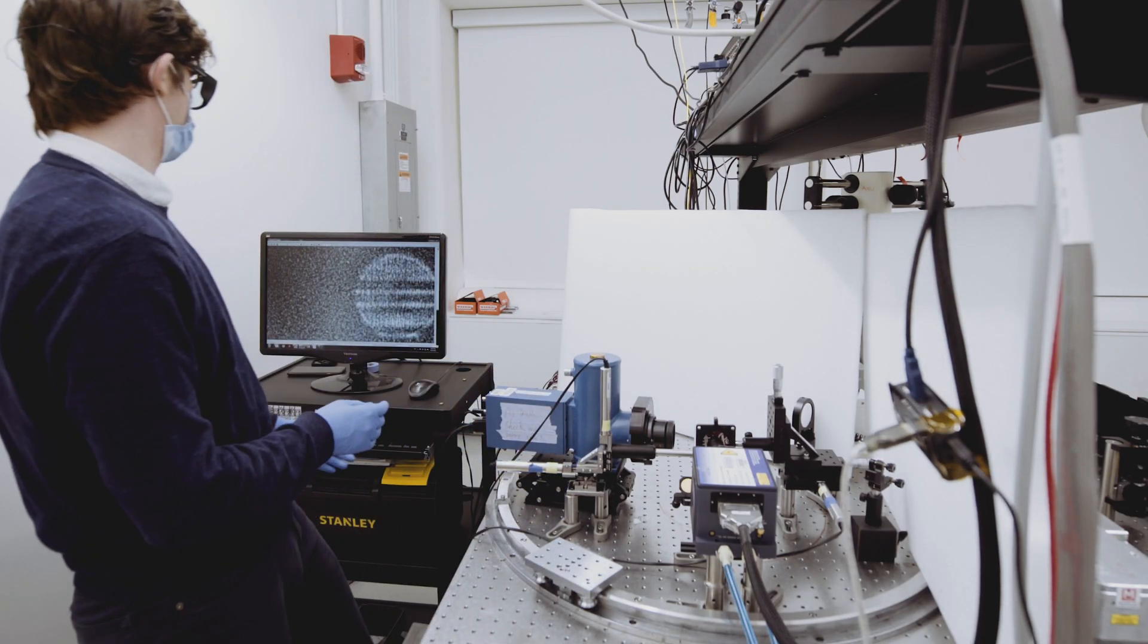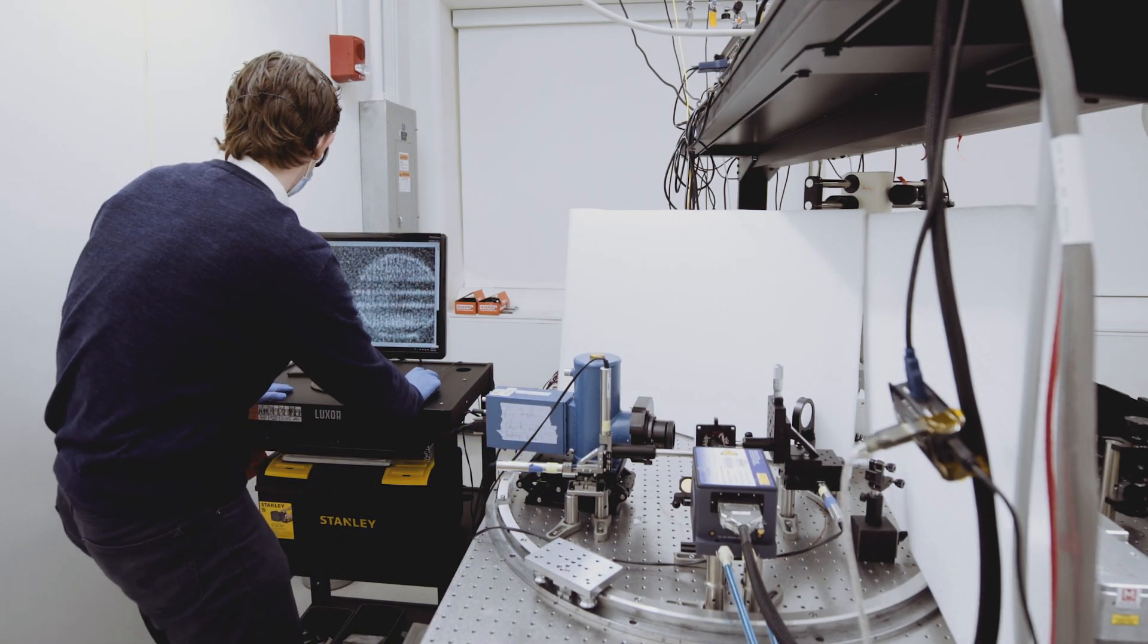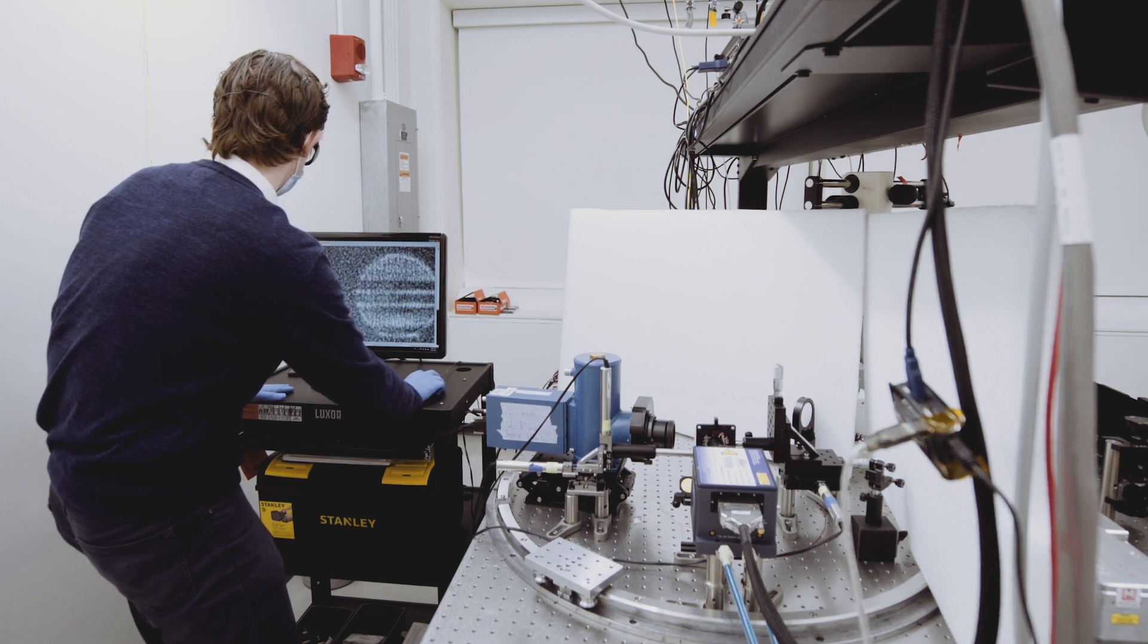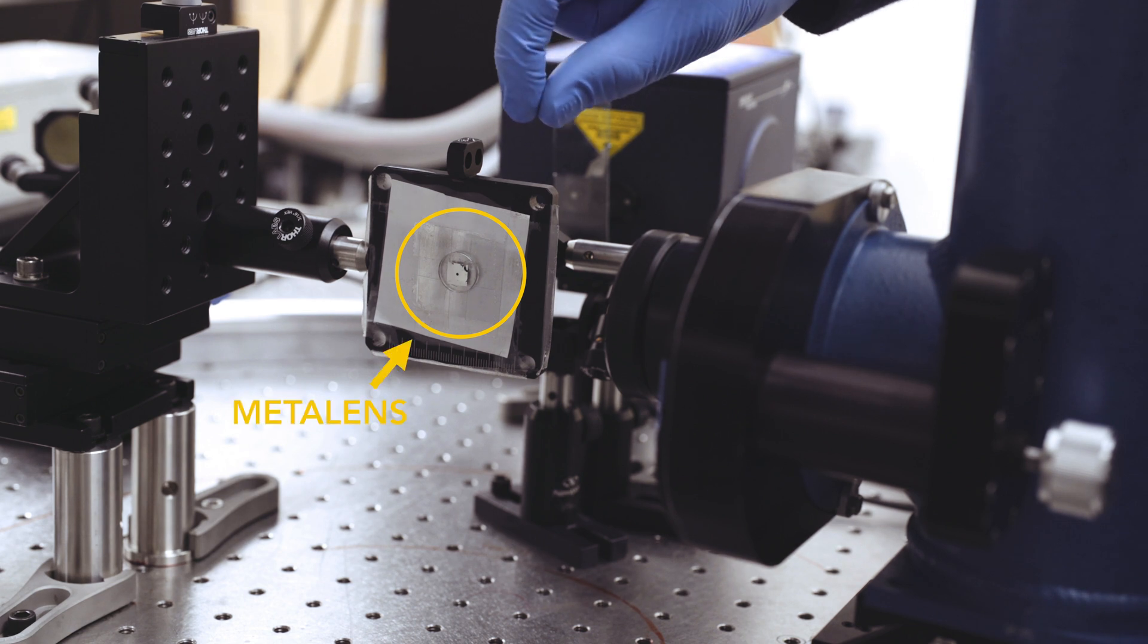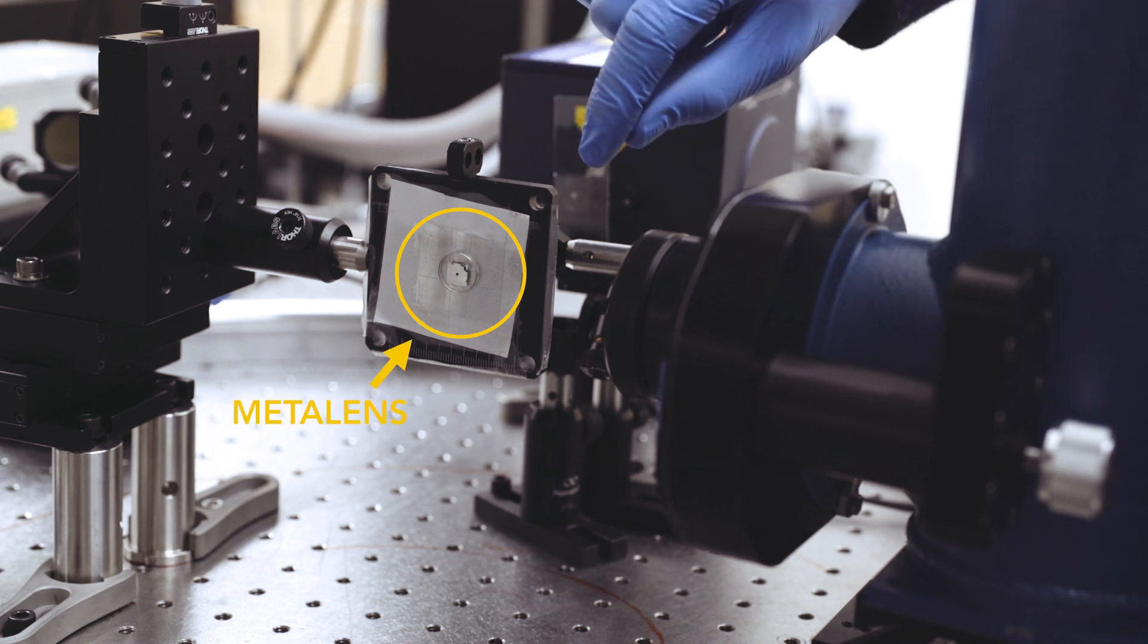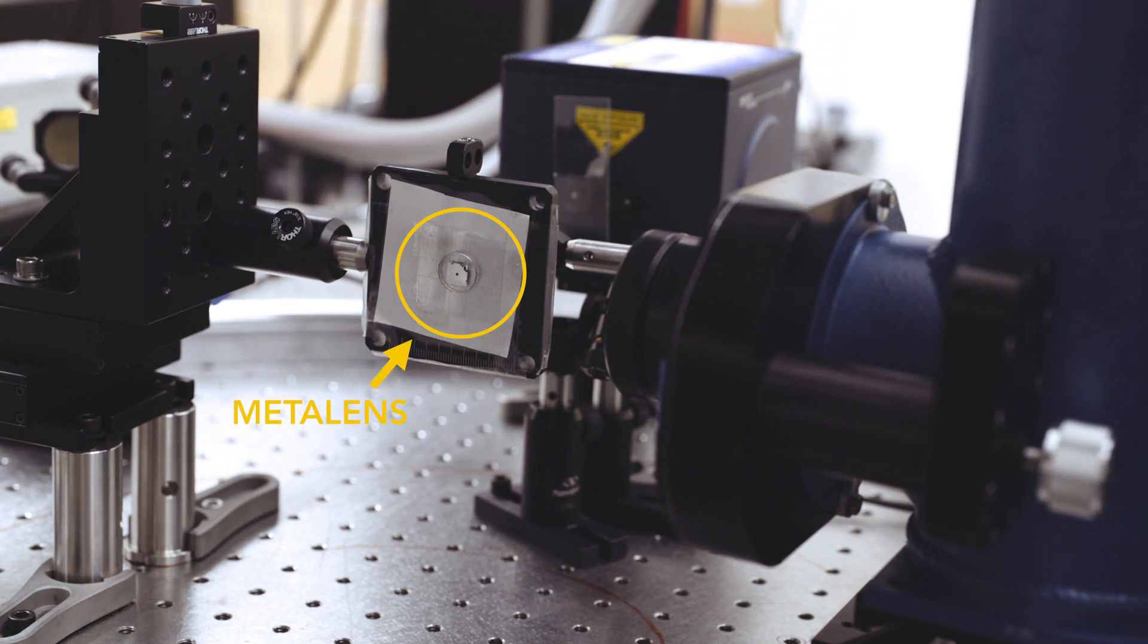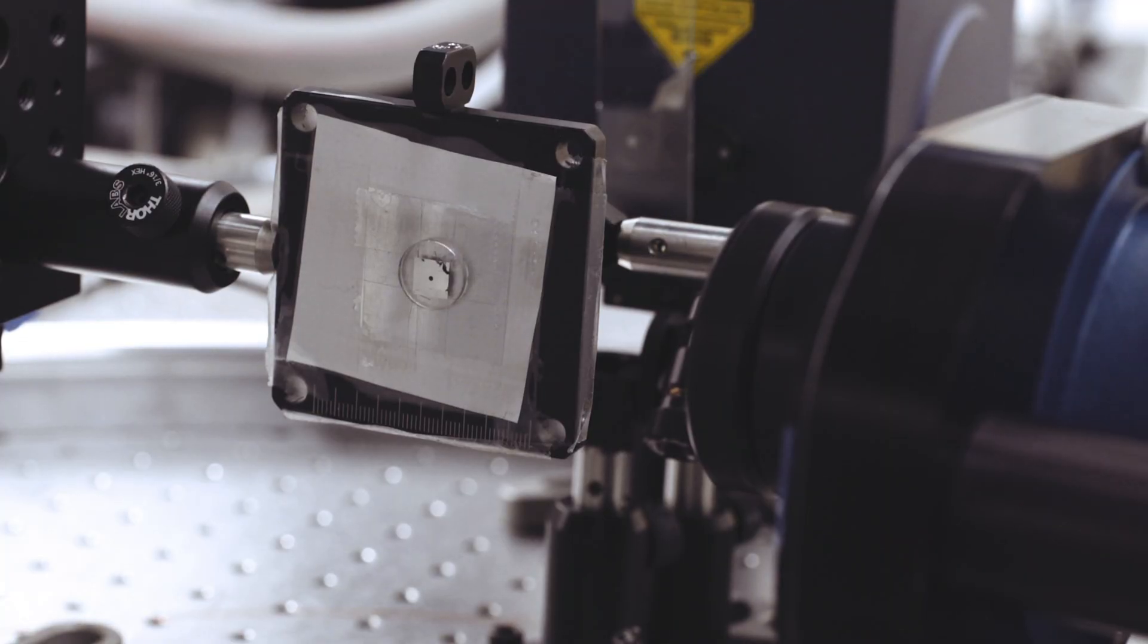A team of engineers at MIT and the University of Massachusetts at Lowell have designed a wide-angle lens that is completely flat. The design is a type of meta-lens, which is a wafer-thin material patterned with microscopic features that work together to manipulate light in a specific way.